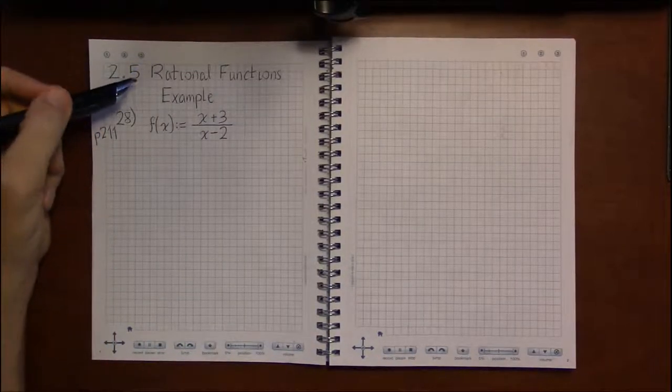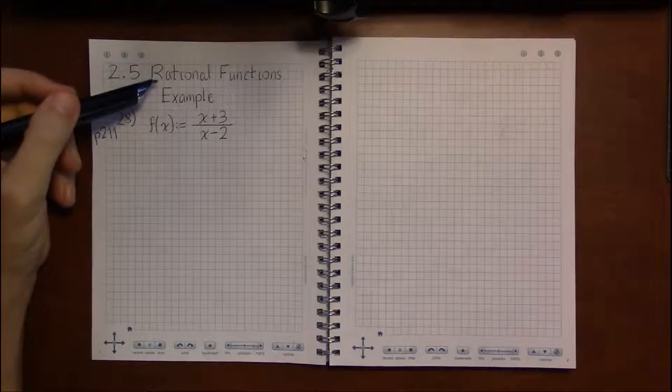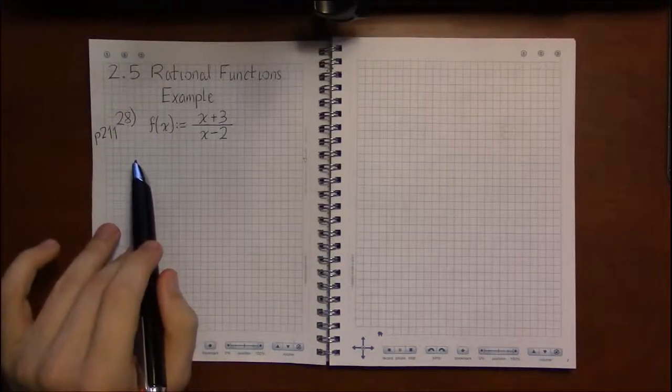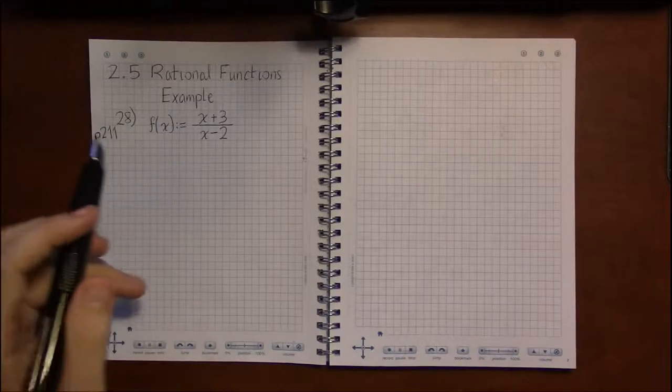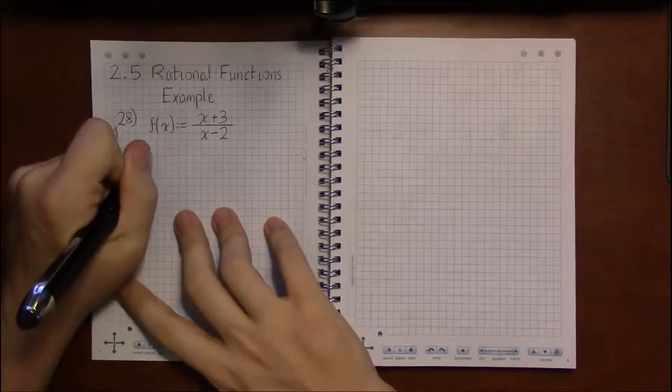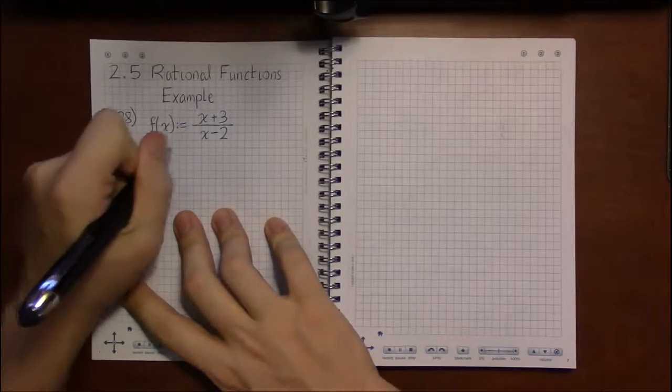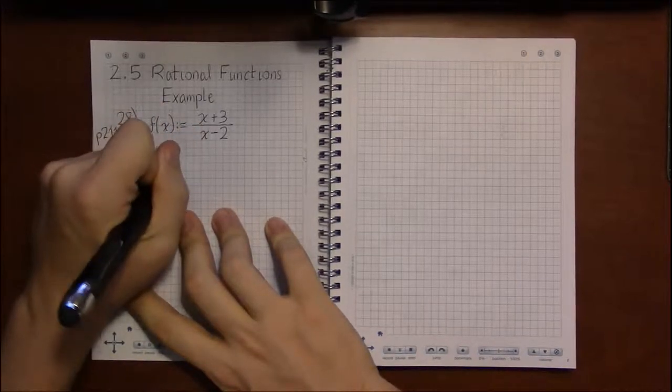Alright, let's take a look at some examples of rational functions. So on problem 28, we're trying to find the vertical asymptotes of the following function: x plus 3 all over x minus 2.